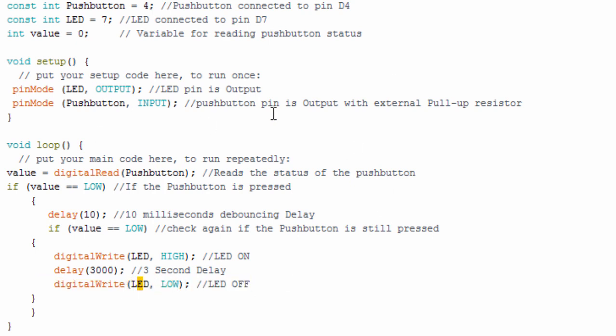This is going to run repeatedly. So after our push button is released, value is going to be high. So this condition is going to evaluate to false and this block of code will be skipped.